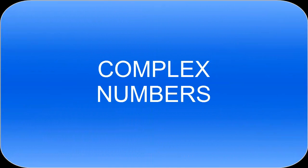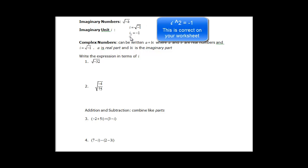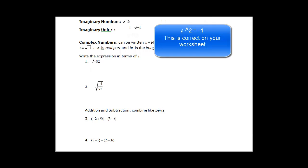This video is going to talk about complex numbers. We have imaginary numbers, which is the square root of negative k. Normally we don't have a negative under the square root, but when we do, it's an imaginary number. The imaginary number is i. So i is equal to the square root of negative 1, and i squared is equal to negative 1.